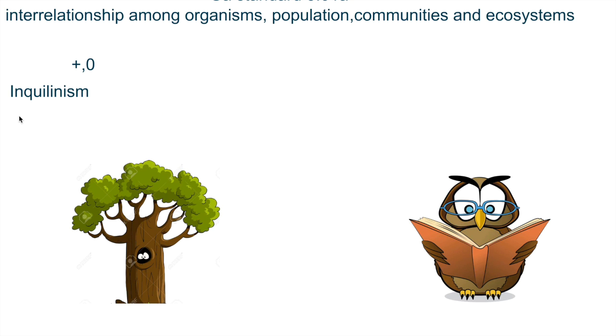The second we're going to talk about today is inquilinism. An example of that is an owl in a tree. The owl is flying around and sees the tree, sees a hole in the tree and says, hey man, that'd make me a really good home. And I think I'm going to use that for my home. So he ends up living there.